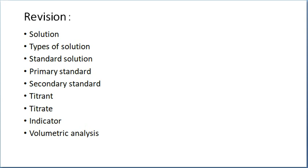First, we have seen what is meant by a solution. A solution means it is a homogeneous mixture of two components: solute and solvent. The one which is present in the major component is known as solvent, and the one present in minor component is known as solute. For example, in sugar solution, sugar is taken in small quantity — it is the solute — and it is dissolved in a large quantity of water, which acts as the solvent.